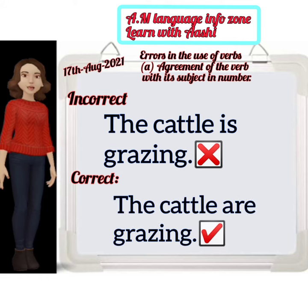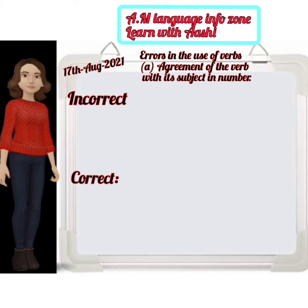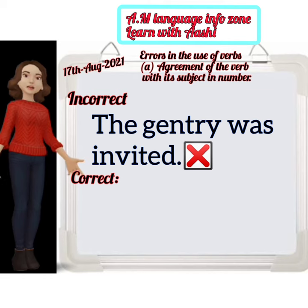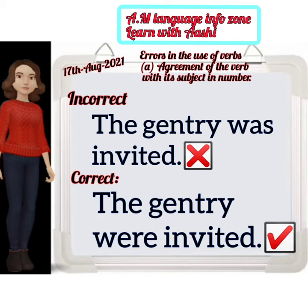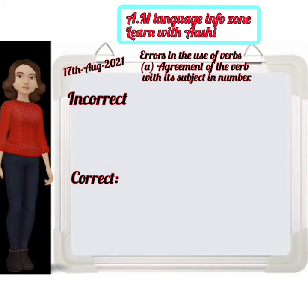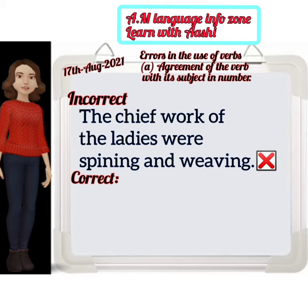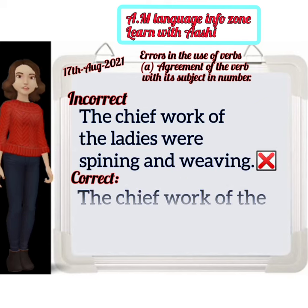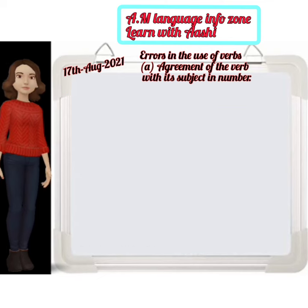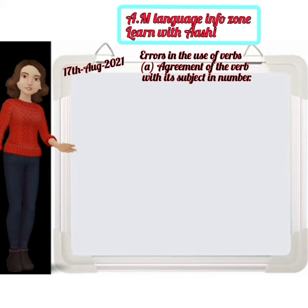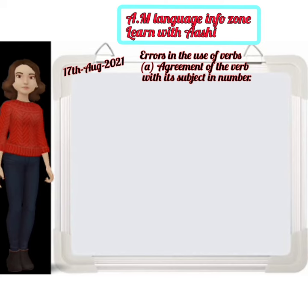The correct form is: 'The cattle are grazing.' Next: 'The gentry was invited' — incorrect. The correct form is: 'The gentry were invited.' Finally: 'The chief work of the ladies were spinning and weaving' — incorrect. The correct form is: 'The chief work of the ladies was spinning and weaving.'